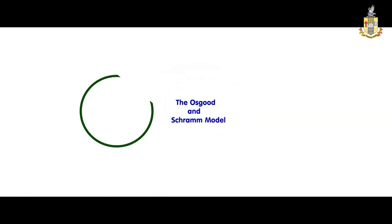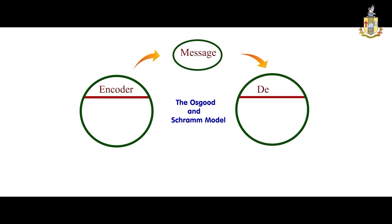Encoder is nothing but the person who sends the message. And the message is the actual content of a conversation or a communication process. And the decoder is the person who receives the message. The fourth one is Interpreter — after receiving the message, the receiver tries to analyze, understand, or perceive the message. This process is called the Interpreter.